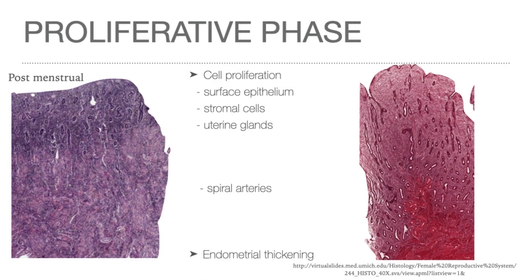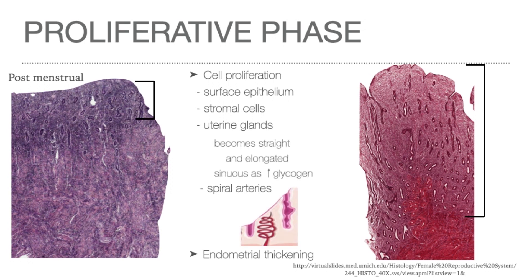In the proliferative phase, there is proliferation of cells in the epithelium of the stratum basale, resulting in restoration of the surface epithelium and active proliferation of stromal cells, with progressive lengthening of the endometrial glands. These regenerative changes result in growth of the endometrium from a postmenstrual thickness of 0.5 mm to 2 to 3 mm. The uterine glands are initially relatively straight but become more sinuous as epithelial cells accumulate glycogen, displacing the nucleus toward the apex. The coiled spiral arteries regenerate and lengthen.